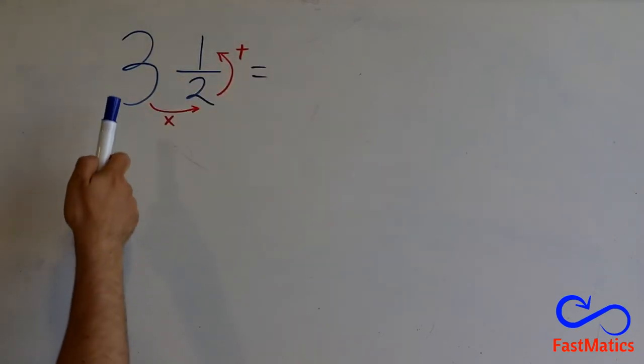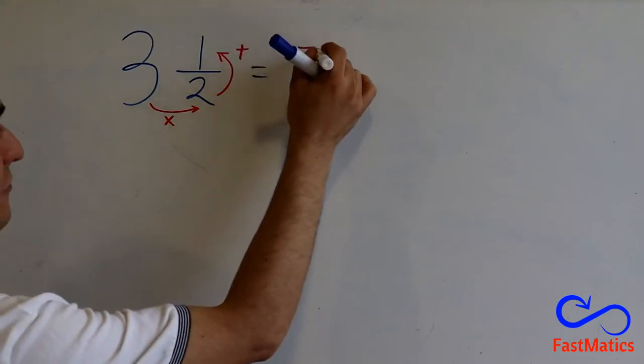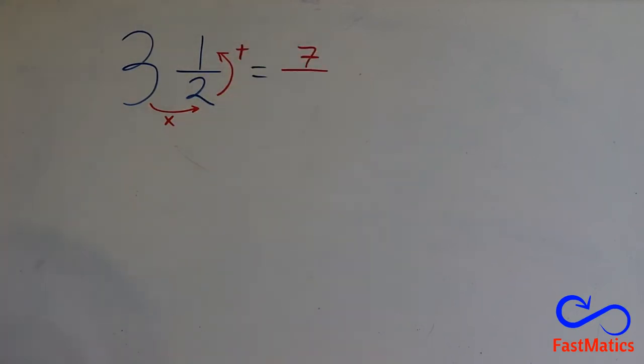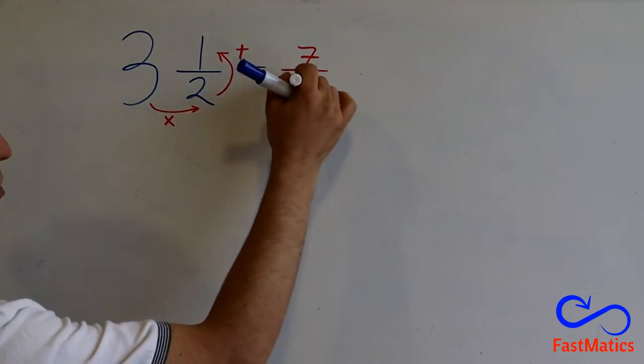So, 3 times 2 is 6, plus 1 is 7. Now in the denominator I'm going to write the same number, 2.